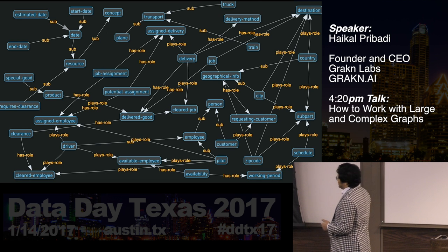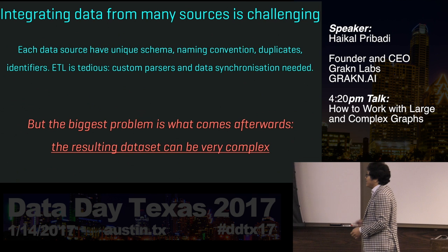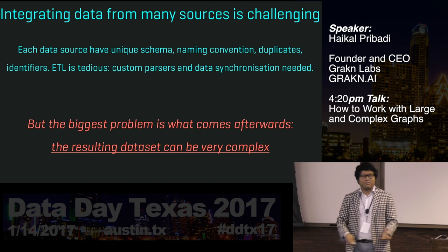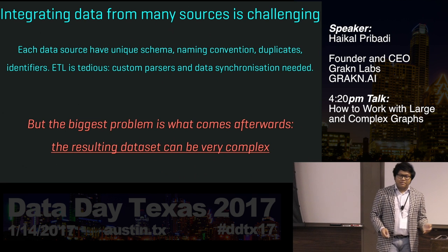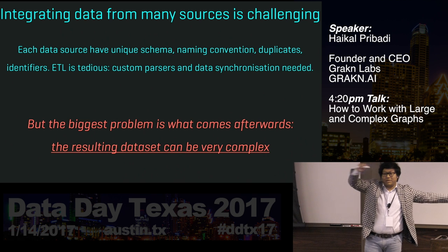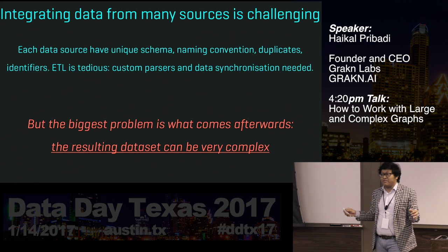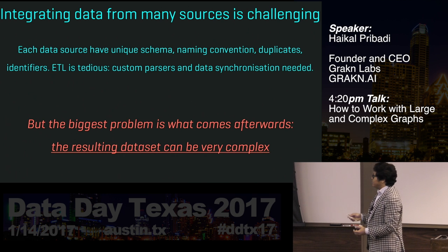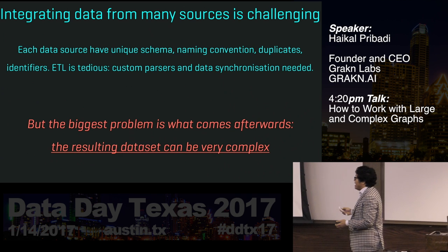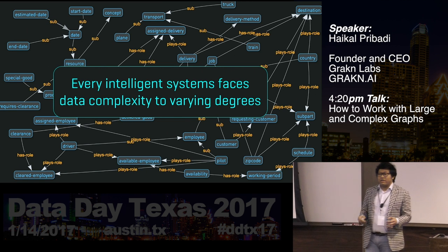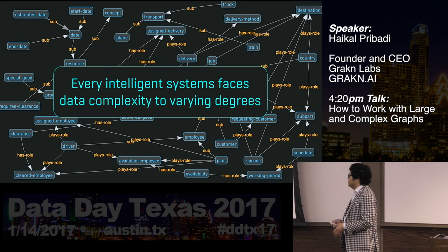I realized that integrating information from so many sources is really, really challenging — but it's not just the ETL. The ETL is obviously challenging; you have to do parsing, and it's often not reusable from one company to another because the datasets are very specific. But the biggest challenge is what comes afterwards: after you integrate all of this information from 30 to 40 databases into one huge consolidated graph, which we needed to do in order to perform any type of mathematical linear graph optimization on top of the dataset. The result is a really complex dataset, and this doesn't only apply to logistics or scheduling — basically any type of intelligent system faces this problem to varying degrees.